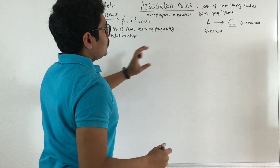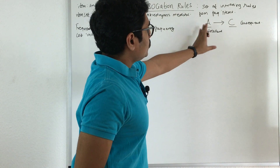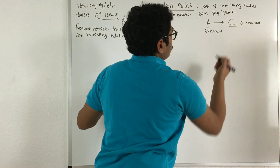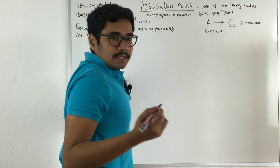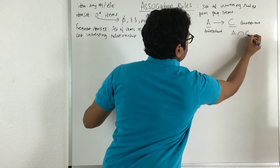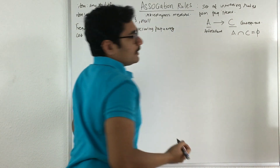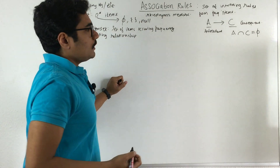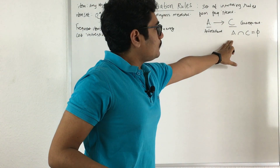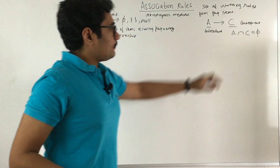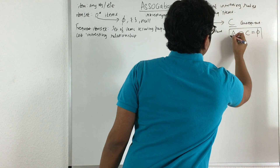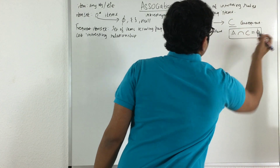As a result of the antecedent item set, you derive the consequent. In terms of crisp set theory, A intersect C is equal to phi — meaning they are disjoint. There are no duplicate or redundant items present in both sides. This is the condition satisfied by association rules.